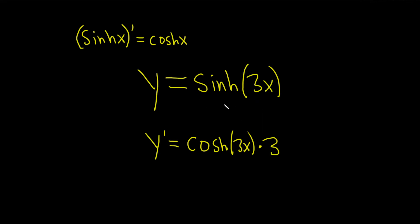So you take the derivative of the outside, leave the inside untouched, and then multiply by the derivative of the inside. That's the chain rule.